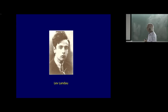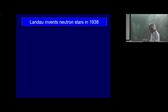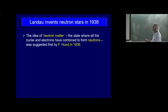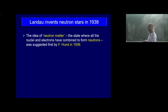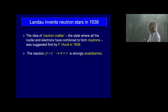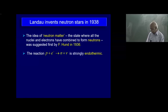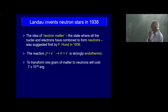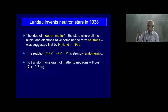Very quickly to recall: the story began in 1938 with Landau advancing the idea of a star made up more or less entirely of neutrons. That idea originated from Hund in 1936, who said that under certain circumstances all the protons and electrons can combine to form neutrons. But the difficulty was that the reaction proton plus electron going to neutron and neutrino is strongly endothermic — you need 7 times 10 to the power 18 ergs to convert just one gram of ordinary matter into neutrons. So clearly that will not happen spontaneously.